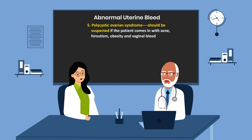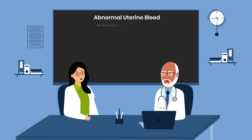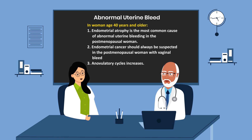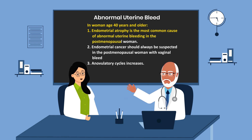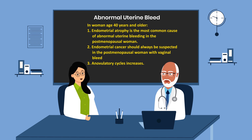Polycystic ovarian syndrome should be suspected if the patient presents with acne, hirsutism, obesity, and vaginal bleeding. In women aged 40 and older, endometrial atrophy is the most common cause of abnormal uterine bleeding in the postmenopausal woman. Endometrial cancer should always be suspected in the postmenopausal woman with vaginal bleeding. There will also be an increase in anovulatory cycles in this age range.